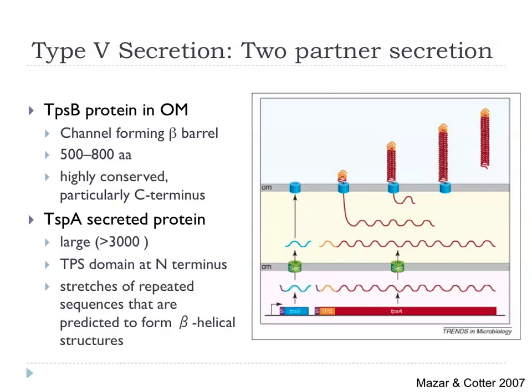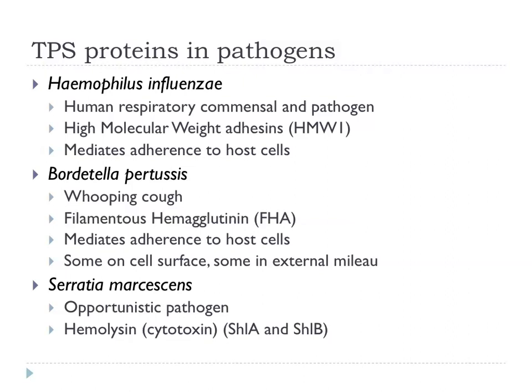The secreted protein has a TPS domain at the N-terminus which allows it to interact with the secretion system, going through the beta barrel. These proteins typically form beta-helical structures and fold up outside the cell once they get through the pore, forming complex arrays of beta helices outside the cell. Examples include HMW adhesins from Haemophilus influenzae mediating adhesion, filamentous haemagglutinin from Bordetella pertussis — a major virulence factor involved in adherence to host cells — and a hemolysin from Serratia marcescens.